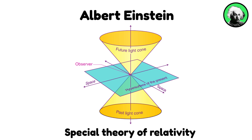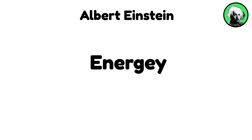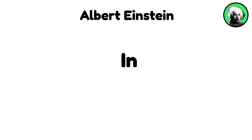Einstein's special theory of relativity introduced the concept that the laws of physics are the same for all non-accelerating observers, and that the speed of light in a vacuum is constant, leading to the famous equation E equals mc squared, which describes the equivalence of energy and mass.